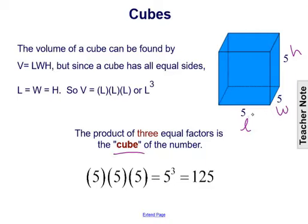So we're multiplying that length three times: 5 times 5 times 5, which is equal to 5 to the third, which is 125. So the volume is 125, and since it's the volume of a cube, we say that's not just 5 to the third — we can say that's 5 cubed.